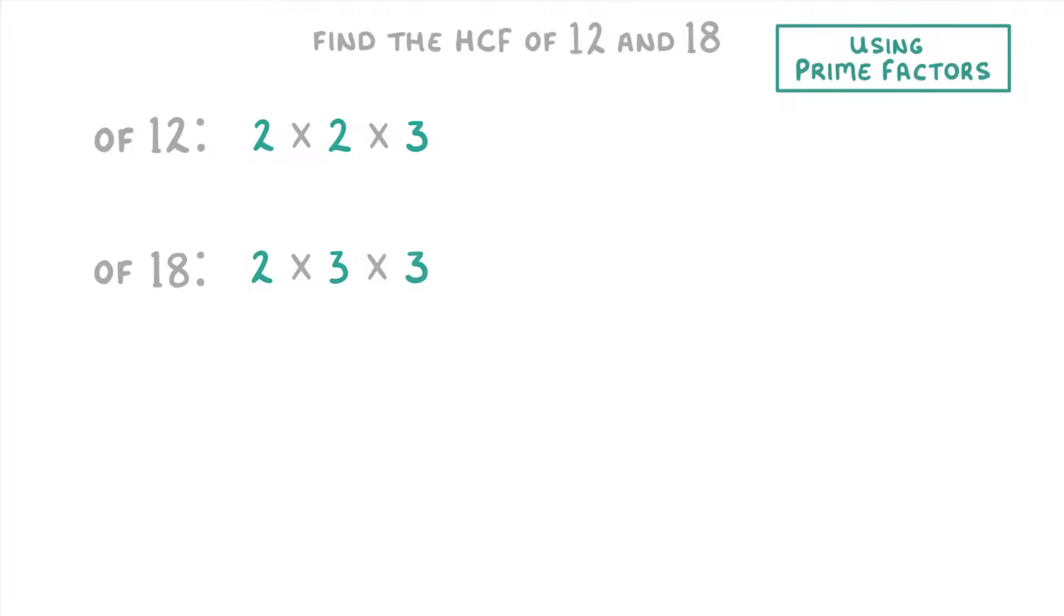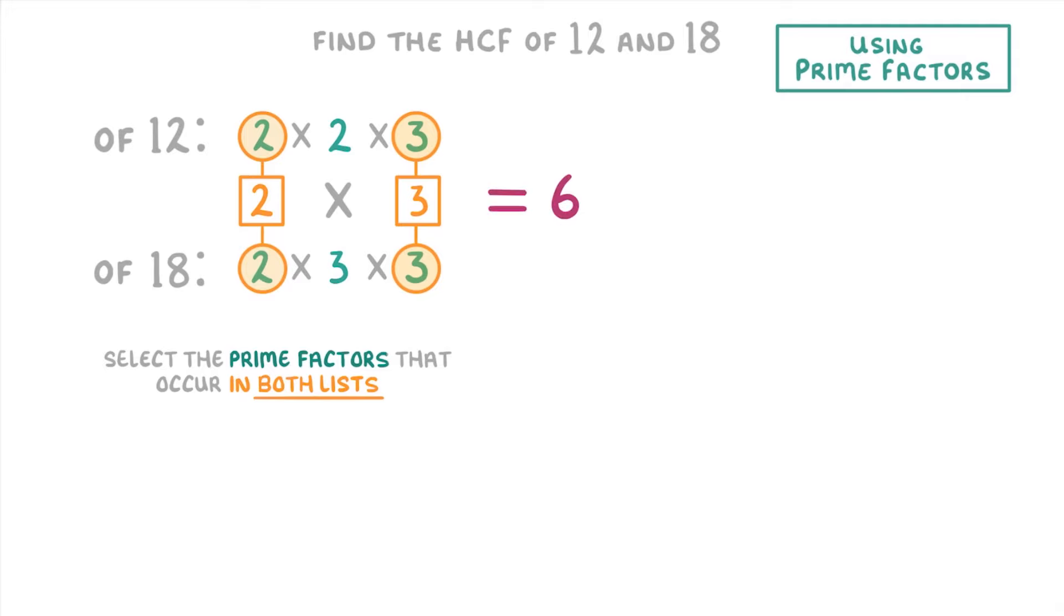Once you have the prime factors, to find the highest common factor of the two numbers, you need to select only the prime factors that appear in both prime factor lists. So, in this case, that's a 2 and a 3. And we then multiply these together to get 6, which will be our highest common factor.